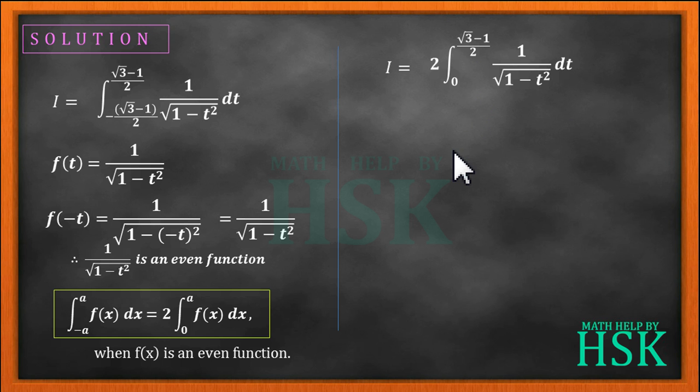Since the integral of 1 by square root of 1 minus t square dt is equal to sine inverse t, so we get value of I equal to 2 times sine inverse of t from 0 to root 3 minus 1 upon 2, which gives the value of I as